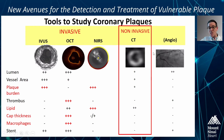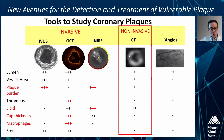A little bit less precise, but certainly playing an increasingly important role, is coronary computer tomography angiography, which can detect lipid-rich lesions — so-called low-attenuation plaques — as well.